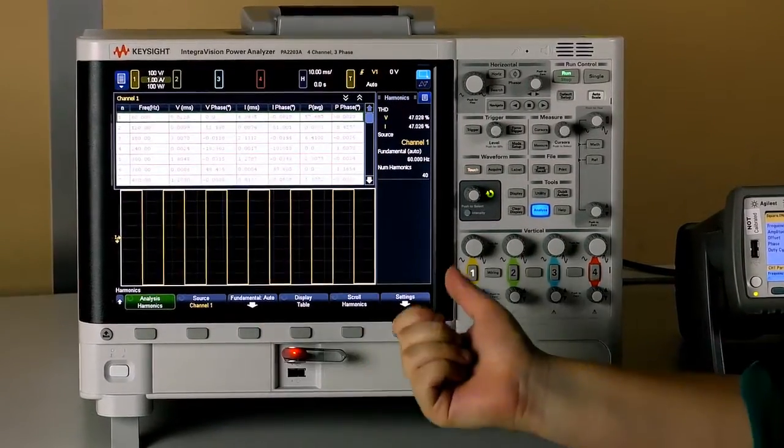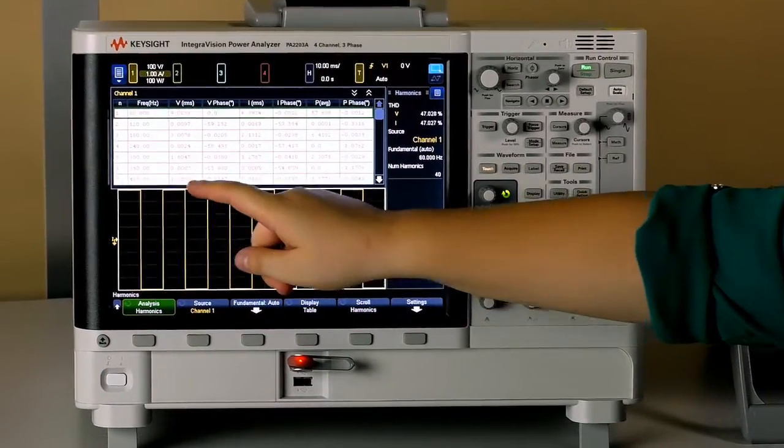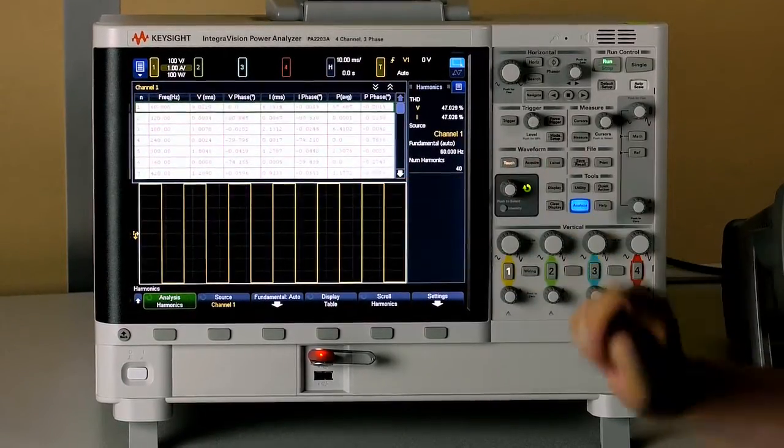And you'll see the table of harmonics data show up. It shows the number of the harmonic, the frequency, the voltage magnitude and phase, the current magnitude and phase, and the power magnitude and phase.